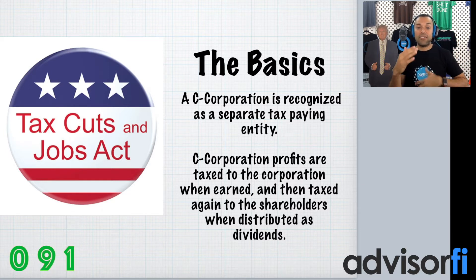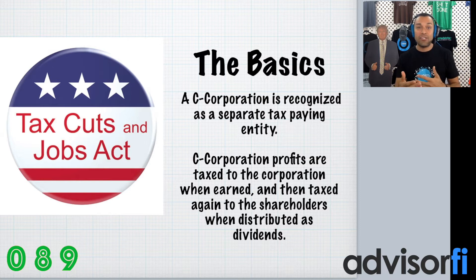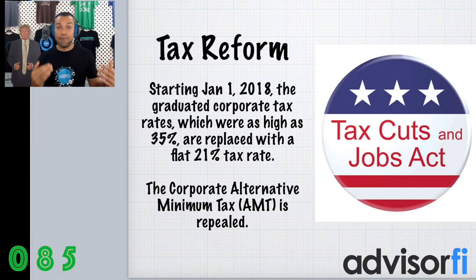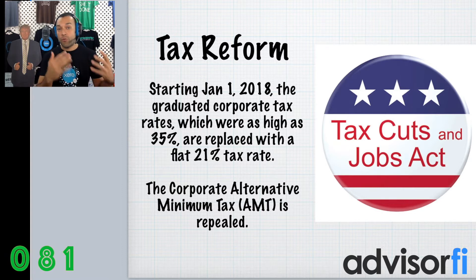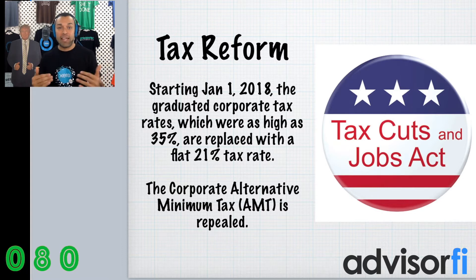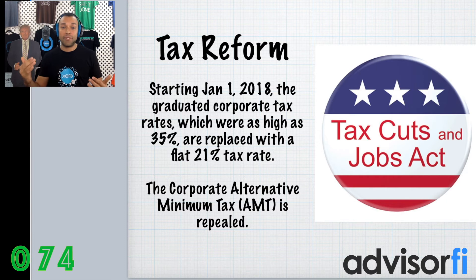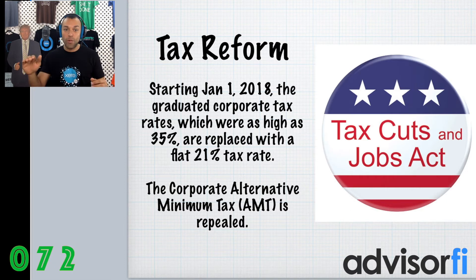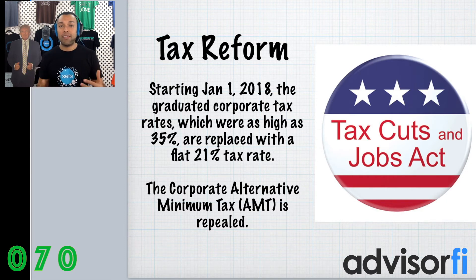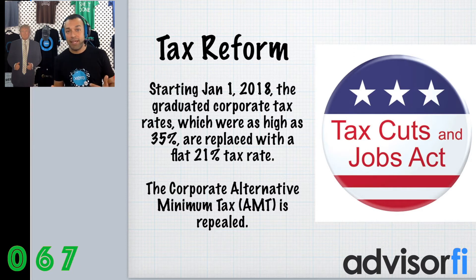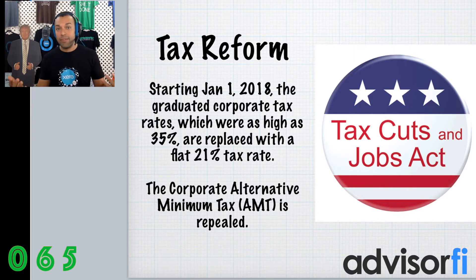And then when it's actually distributed, it's taxed again to the shareholder as a dividend. Starting in 2018 going forward, the tax reform did affect C corporations. Starting January 1st of 2018, the graduated corporate tax rates — that is the four or five different tax brackets that C corporations had, even some at the highest level of 35% — were all replaced by a flat 21%. And on top of that, the alternative minimum tax, which is another tax that C corporations pay, was completely repealed through the tax reform.